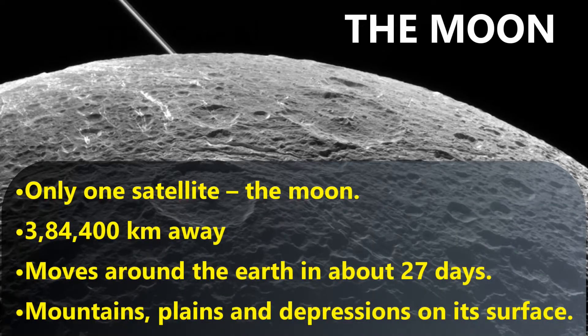The Moon is the only satellite of Earth. It is about 384,400 kilometers away. The Moon moves around the Earth in about 27 days and takes exactly the same time to complete one spin, so only one side of the Moon is visible to us.